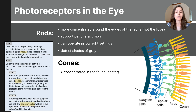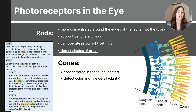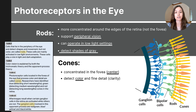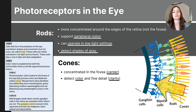Cones are concentrated in the fovea — the very center of the retina where light is directly focused. Cones detect color and fine detail. Here are a few important takeaways: rods and cones convert light into electrical signals — this is called transduction. Rods detect light in grayscale and can operate in low levels of light, helping us with peripheral vision. Cones are located in the center of the eye and are responsible for detecting color and clarity. Electrical signals are sent from the rods and cones to the bipolar cells, which send the message to the ganglion cells, and then through the optic nerve to the brain for interpretation.